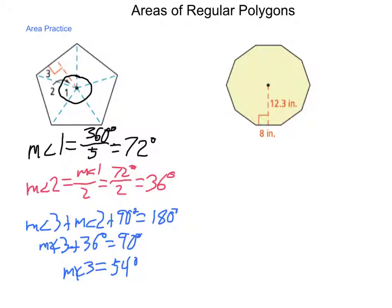Now let's apply that formula for the area of a regular polygon. Here we have a regular polygon, so our area will be one half the apothem times the perimeter. Now let's find out how many sides we have. Count one, two, three, four, five, six, seven, eight, nine, and ten. This is a decagon. So we have one half times the apothem, which is 12.3 inches, times the perimeter, which is eight inches times ten.